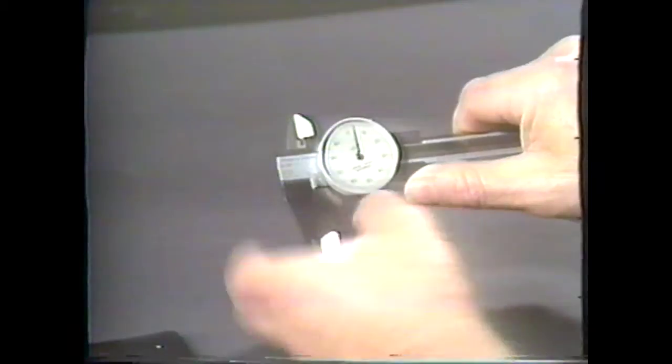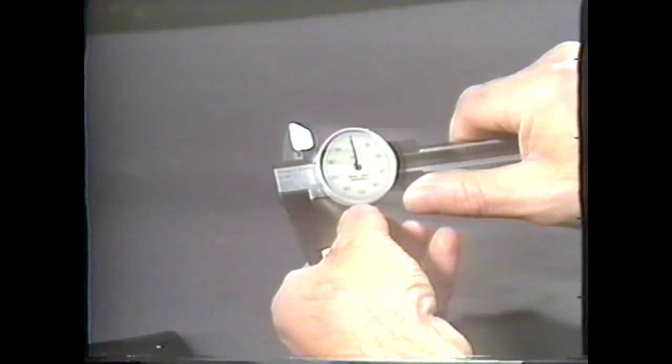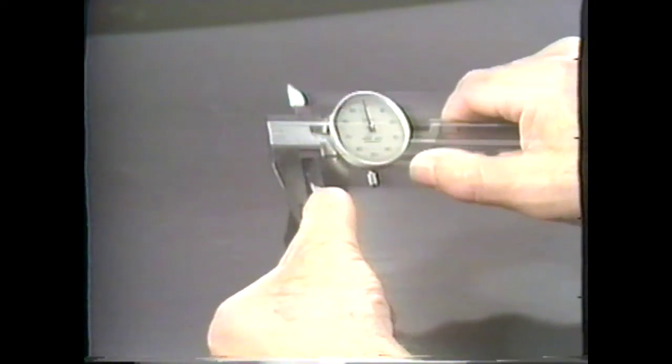Before making any readings with a dial caliper, you must set the dial to zero, lock it, and then make your measurement over the part.